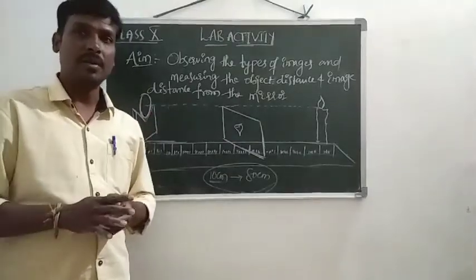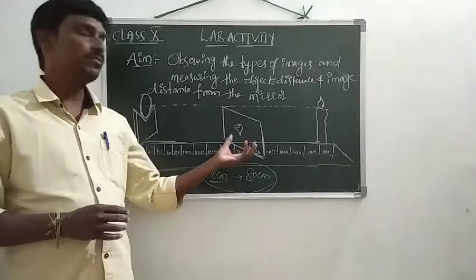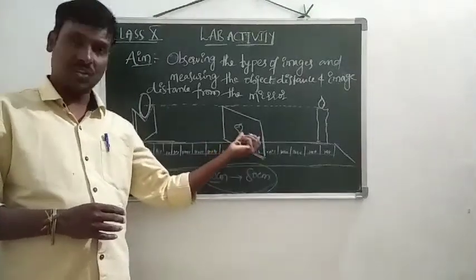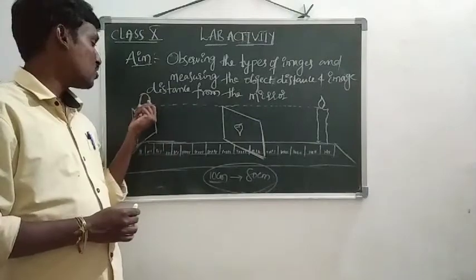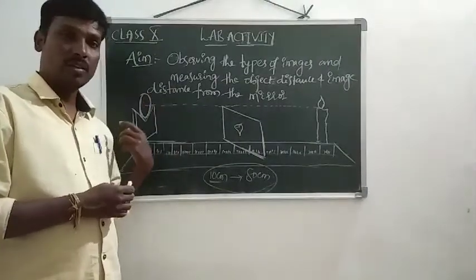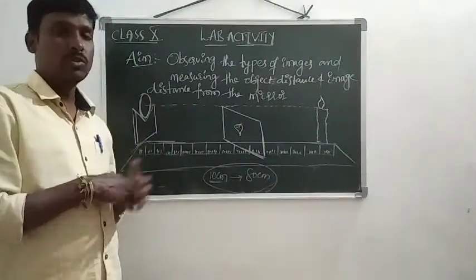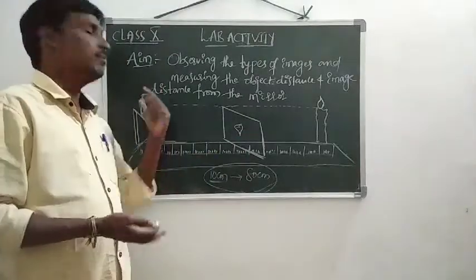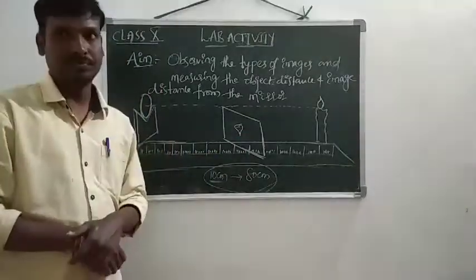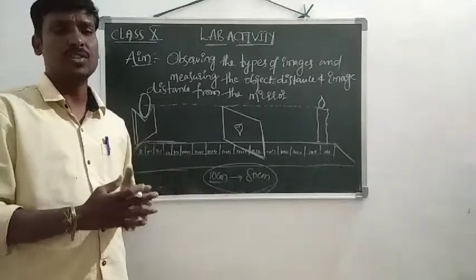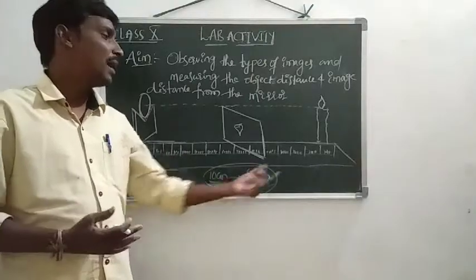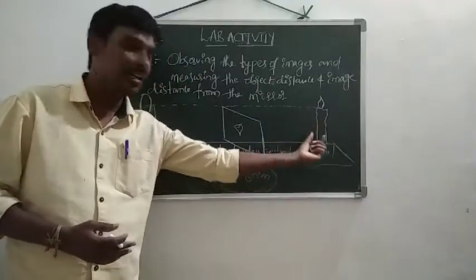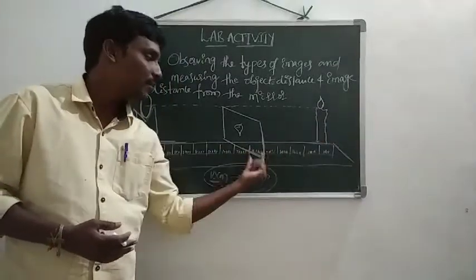We can observe three types of situations: sometimes the image appears on the screen, sometimes the image appears on the mirror only — that is, behind the mirror — and sometimes we get no image on either the paper or the mirror. These situations occur by placing the candle at different positions on the scale.